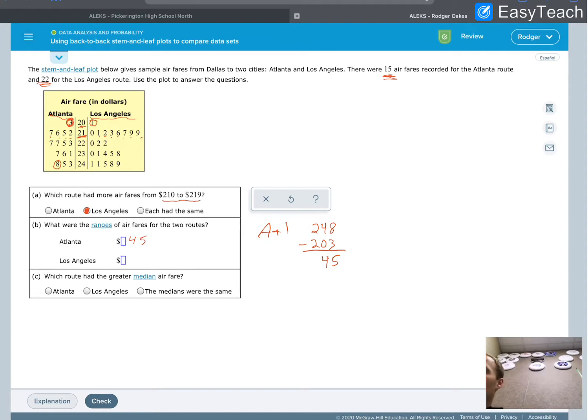Do the same thing for LA. This 9 represents 249, and the 1 we had circled before, that's 201. A little bit easier when we subtract. That's going to give me 48 for LA.